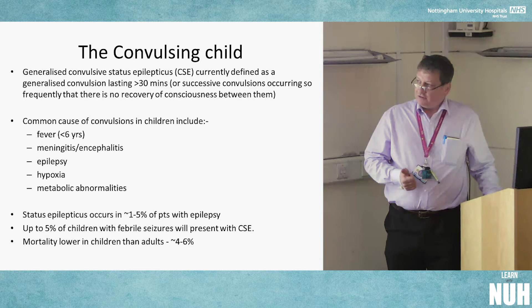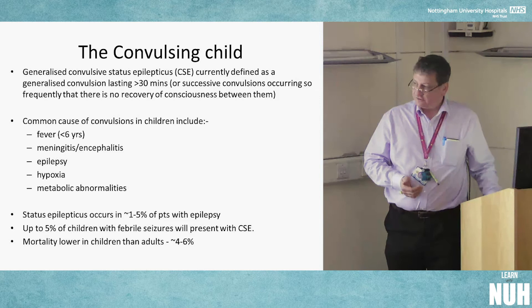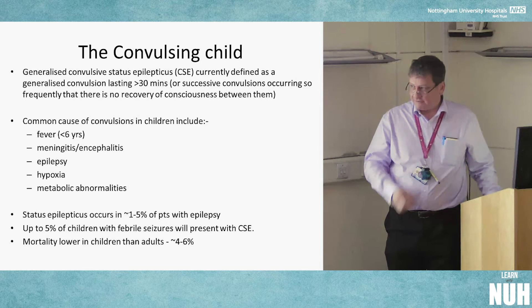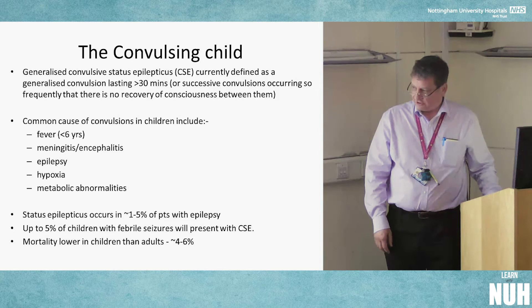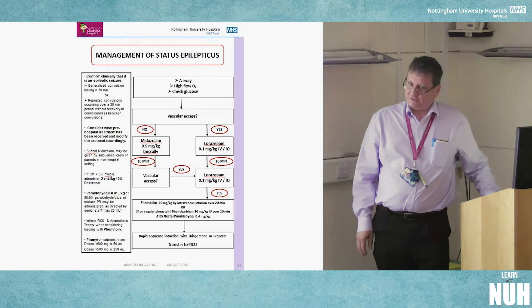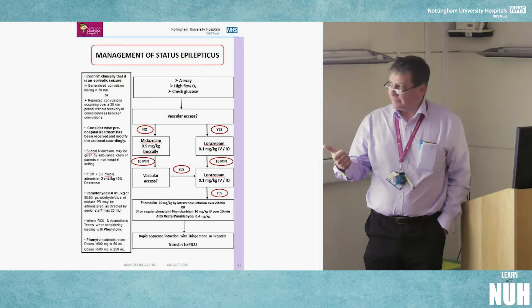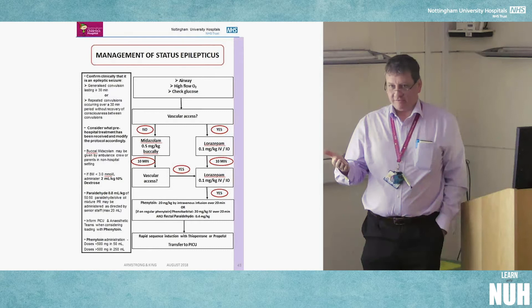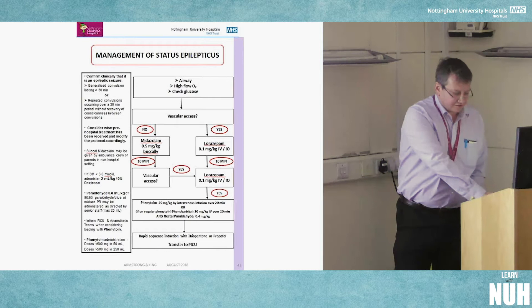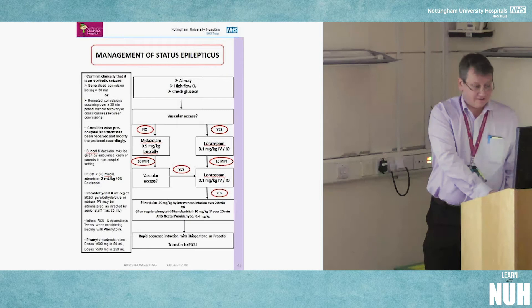Convulsing children: commonly caused by fever — febrile convulsions can be quite scary — but also consider infection and hypoxia. Mortality in convulsing children tends to be lower than in adults. The drug algorithm: first give buccal midazolam if no vascular access, then if access is established, lorazepam 0.1 mg/kg intravascularly is the key first drug. There's a full stepwise algorithm in the PEDS handbook.